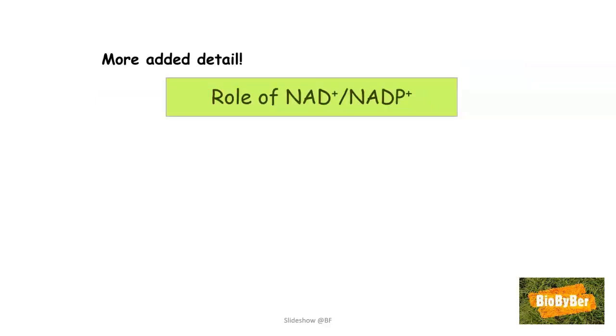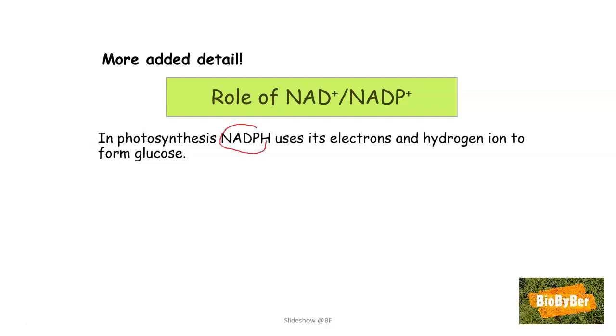What is the role of NAD plus and NADP plus? Well, in photosynthesis we have NADPH with the two electrons and a proton. It will drop those electrons off and the proton off, and these will be used to form glucose, which we will accept as a fact at the moment.